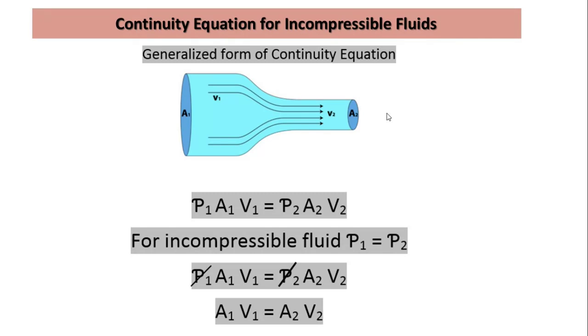When a flow is taking place through a pipe or a close conduit, at section 1 suppose we have area A1 and velocity V1. At section 2 we have area A2 and velocity V2. Then the product of density, area and velocity is constant. That is rho 1 A1 V1 is equal to rho 2 A2 V2.